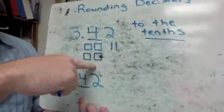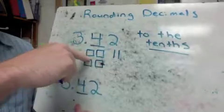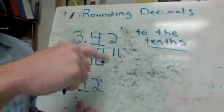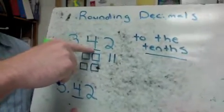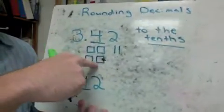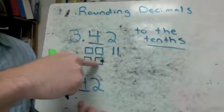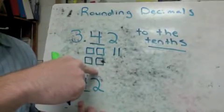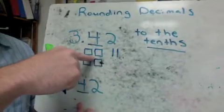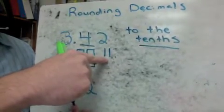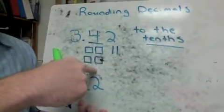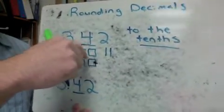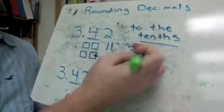I've drawn some pictures here: 4 tenths are those flat pieces, and I've got 2 hundredths. The question to ask yourself is, if I want to round to the nearest tenth, would the nearest tenth be the 4 tenths I have right now, or would I be closer to taking these hundredths and making another tenth? I only have 2 of these and I need 10 to make another flat piece, so I'm much closer to just what I have. My answer stays 3 and 4 tenths.